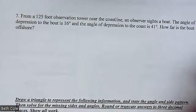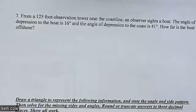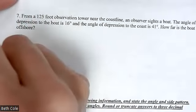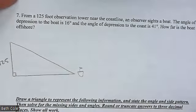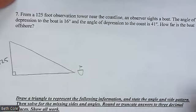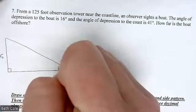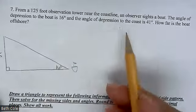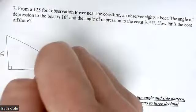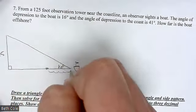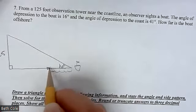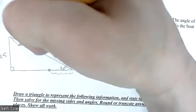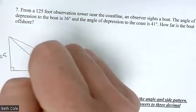From a 125-foot observation tower near the coastline — like a lighthouse — an observer spots a boat. There are going to be two triangles in this one. The tower is 125 feet tall, the boat is out in the water. The angle of depression to the boat is 16 degrees, and since the sky and ground are parallel, by alternate interior angles that 16 goes down to the base. The angle of depression to the coast is 41 degrees — the coast is where the water meets the sand.